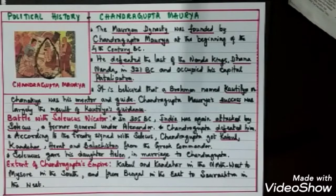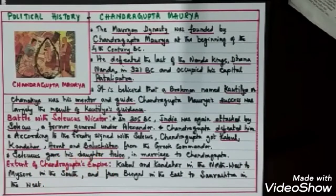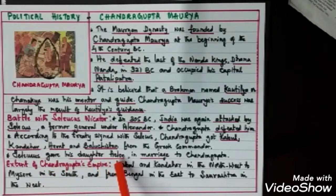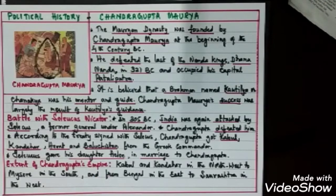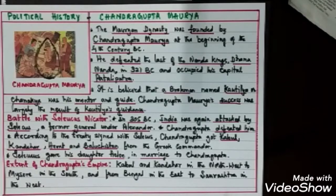According to the treaty, Chandragupta received four important places: Kabul, Kandahar, Herat, and Baluchistan — surrendered by Seleucus. To seal the alliance, Seleucus gave his daughter Helen in marriage to Chandragupta, ending the enmity between the Mauryans and the Greeks. Chandragupta Maurya's empire extended from Kabul and Kandahar in the northwest to Mysore in the south, and from Bengal in the east to Saurashtra in the west.